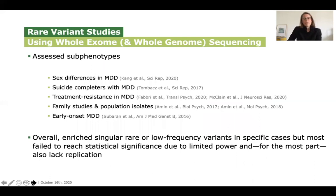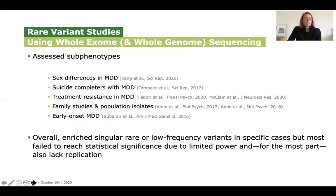Rare variants are currently mostly analysed using whole exome sequencing data. However, costs are still prohibitive, and the sample sizes needed are so large that there is currently no effort comparing just MDD cases to controls. Many groups have resorted to assessing sub-phenotypes such as sex differences, suicide completion, treatment resistance, family studies, population isolates, and early onset MDD. Overall, it is fair to say there is an enrichment of singular rare and low-frequency variants in specific cases, but most studies fail to reach statistical significance due to limited power and also lack replication.